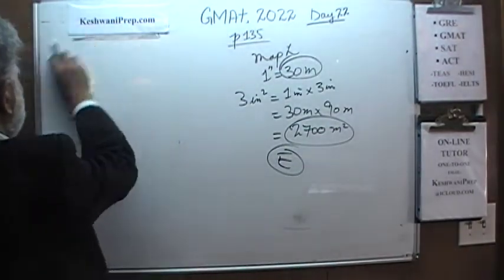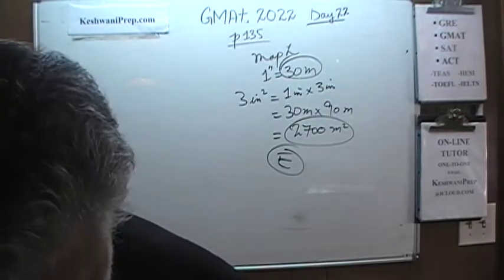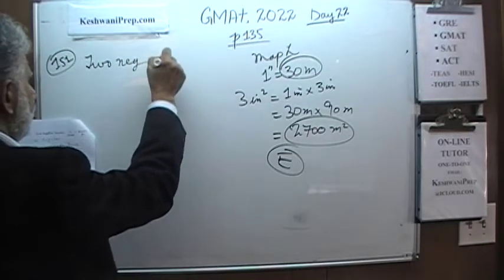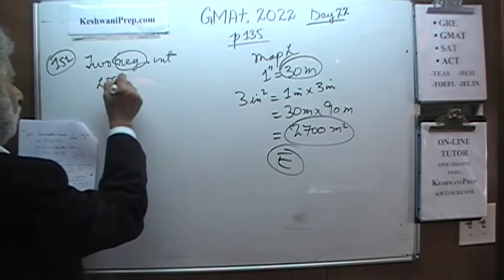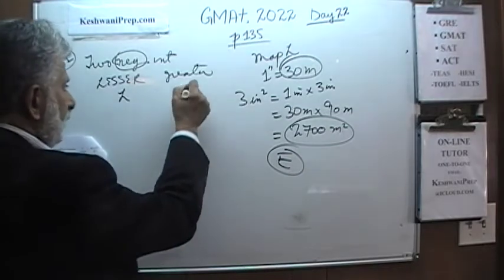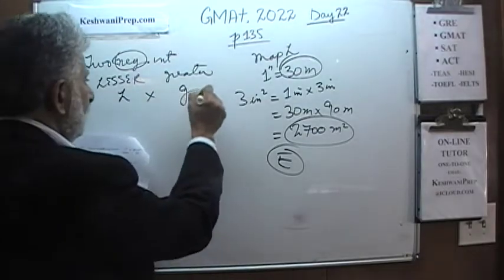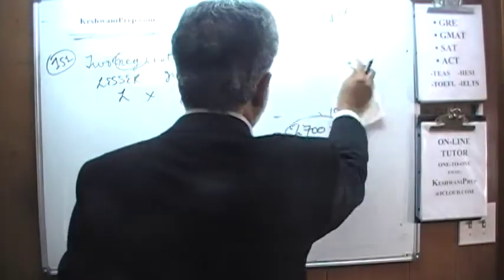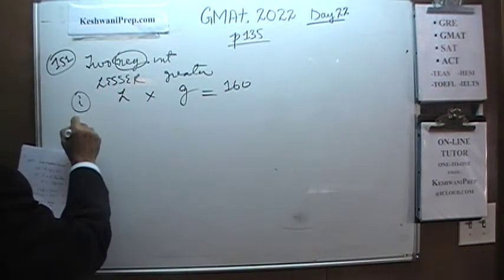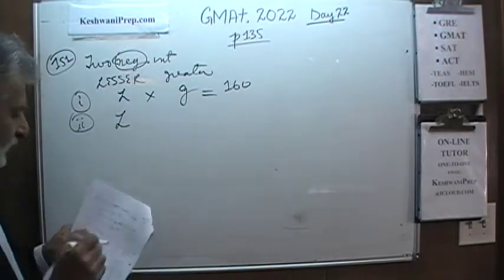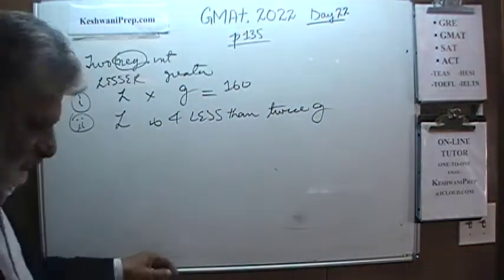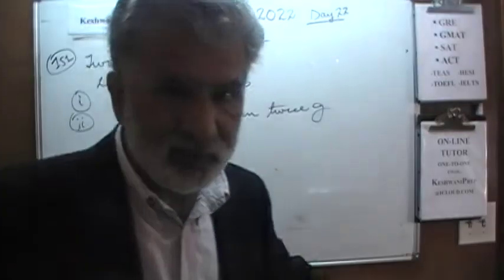Number 151. We have two negative integers. It's important to understand that they are negative. They are called the lesser and the greater. We'll use letter L for the lesser and letter G for the greater. The first thing we are told is that their product equals 160 — L times G equals 160. That's our first equation. We need two equations because we have two unknowns. The second equation: we are told the lesser integer is 4 less than twice the greater.